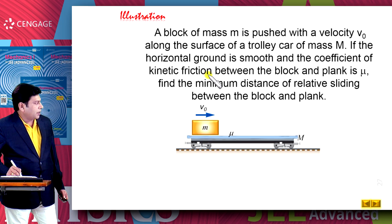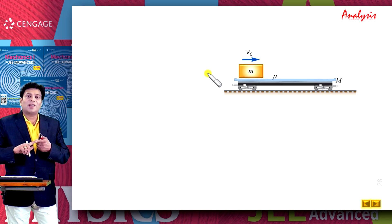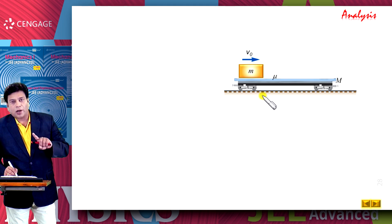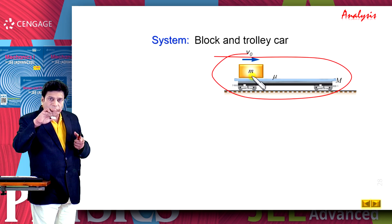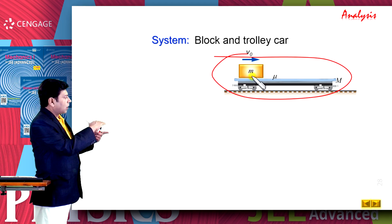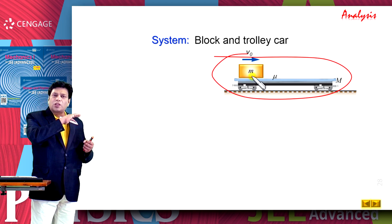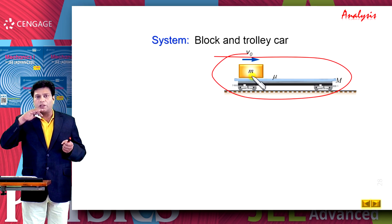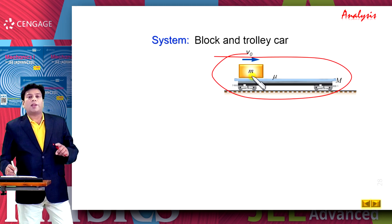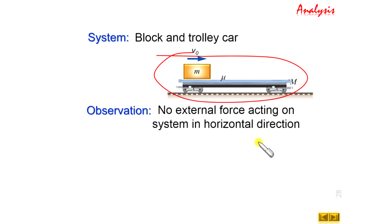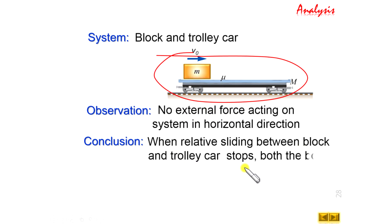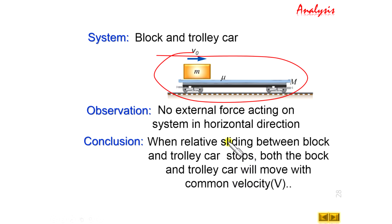Let us make this diagram again. Our system is the block and trolley together. There is friction between block and trolley, but no friction between the trolley and ground, and no external force acts on the system in the horizontal direction. Therefore, no external force acts on the system horizontally, and relative sliding will stop when the block and trolley move with a common velocity.